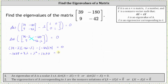Combining like terms on the left, we have lambda squared plus 3 lambda, and negative 1638 plus 1620 equals negative 18, giving us lambda squared plus 3 lambda minus 18 equals 0.